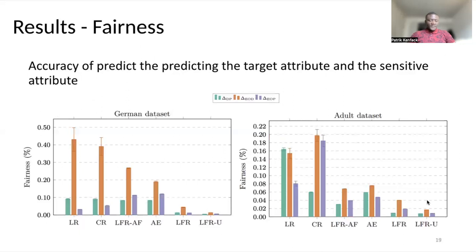Regarding fairness performances, we can see on the German dataset that our model provides better fairness. What is interesting here is that we aim at enforcing statistical parity, but this had a positive impact on other metrics such as equalized odds and equal opportunity. On both datasets, we were able to achieve similar or better results. If you compare in terms of tradeoff, we can see that our method provides better tradeoff than existing approaches.